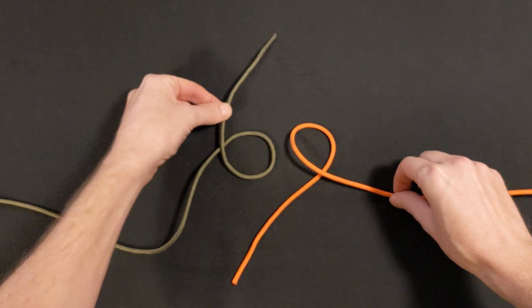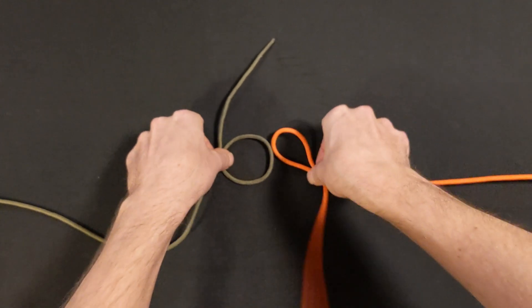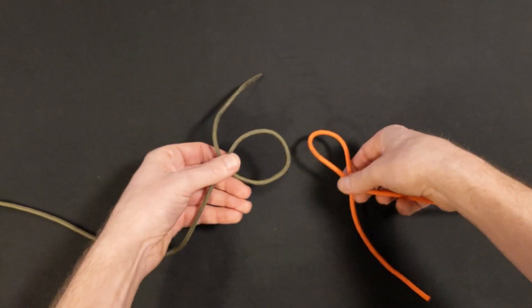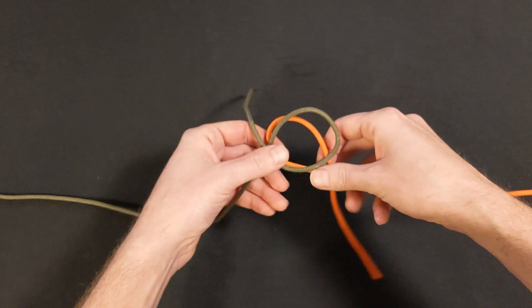Now place the 6 loop on top of the 9 loop. Whichever loop has the working end on top is the loop that needs to go on top here.